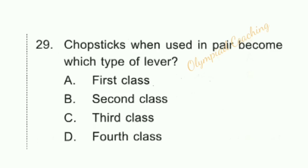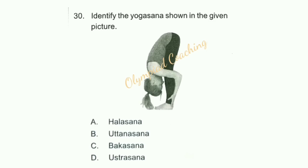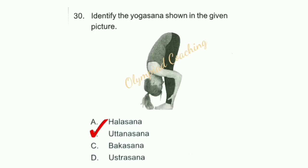Question number 29: Chopsticks when used in a pair become which type of lever? Option C is correct — Third class lever. Chopsticks are a third class lever. In a third class lever, the fulcrum is at one end, force is applied in the middle, and weight is on the other end. Question number 30: Identify the yogasana shown in the given figure. Option B is correct — this is Uttanasana.